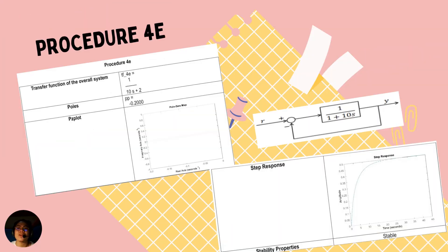For procedure 4e, given a negative feedback loop with the help of MATLAB, we have our poles at the left half plane, PZ plot, and step response impulse presenting a stable system.